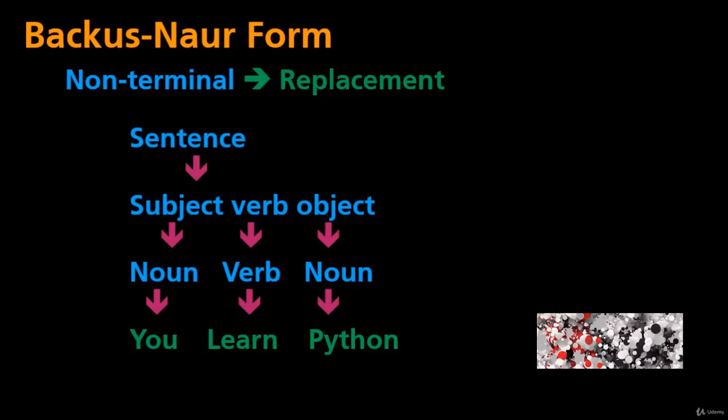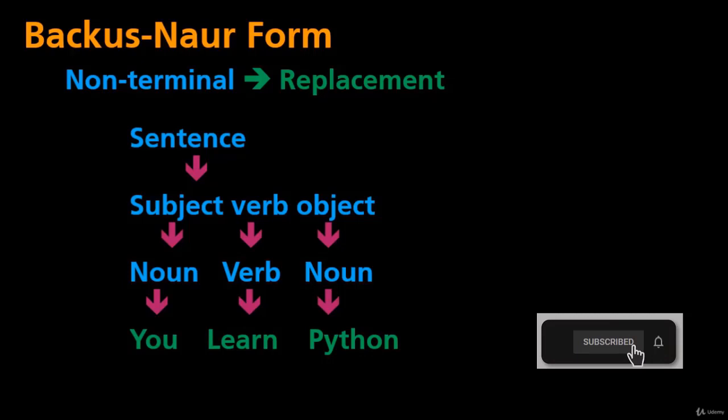Here's an example. Starting from sentence using the grammar above, we can start with sentence. We only have one rule, so sentence could be replaced by subject verb and object. Then the subject could be replaced with noun and the verb will be always a verb. Then the object can be replaced with a noun. In this example I've used the terminals 'you' for a noun, 'learn' for a verb, and 'Python' for a noun.